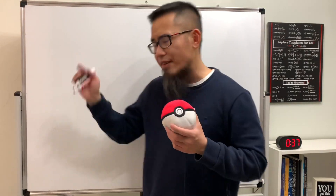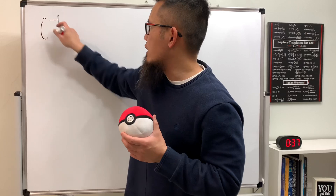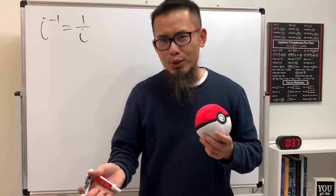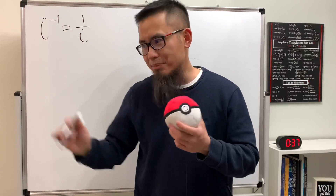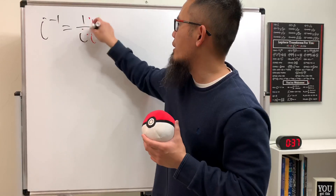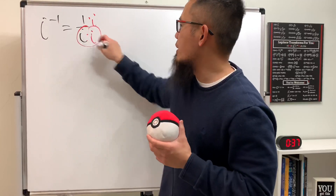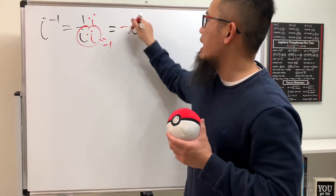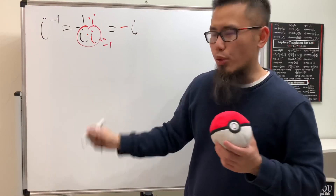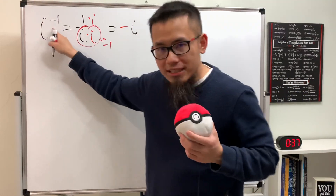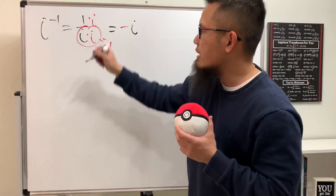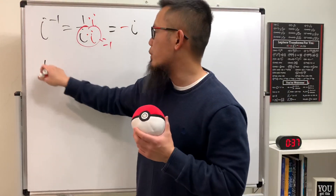I want to show you guys two very pretty complex number equations. First, let's look at i to a negative one — of course this is the same as one over i. This right here is just equal to negative i, because i to the negative one is the same as negative one times i.